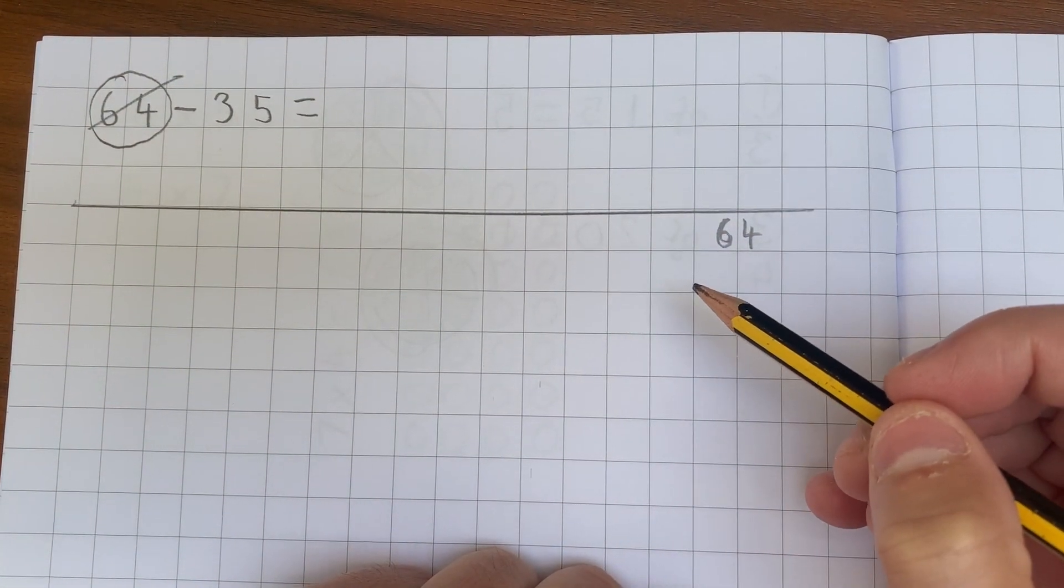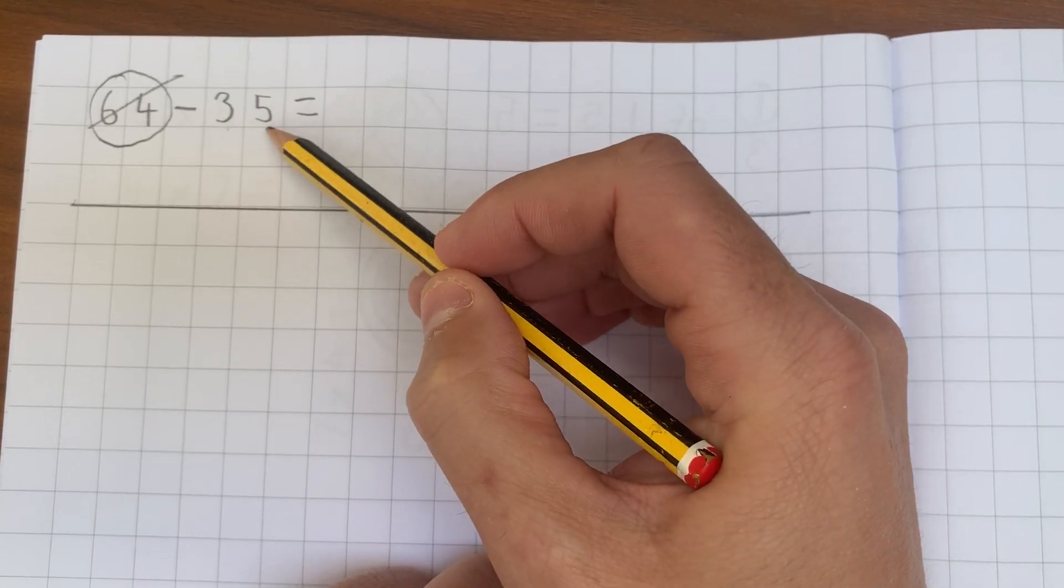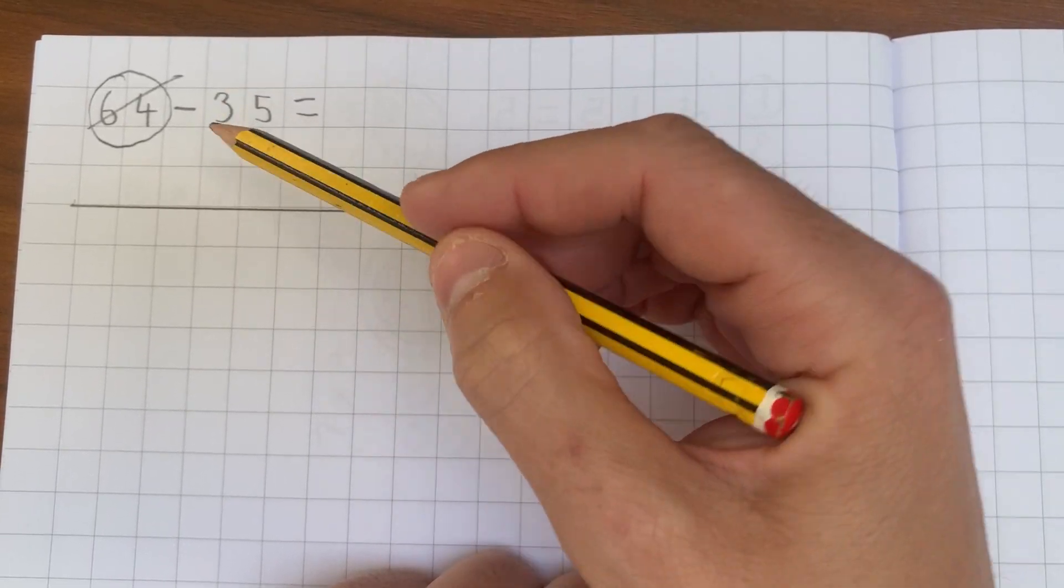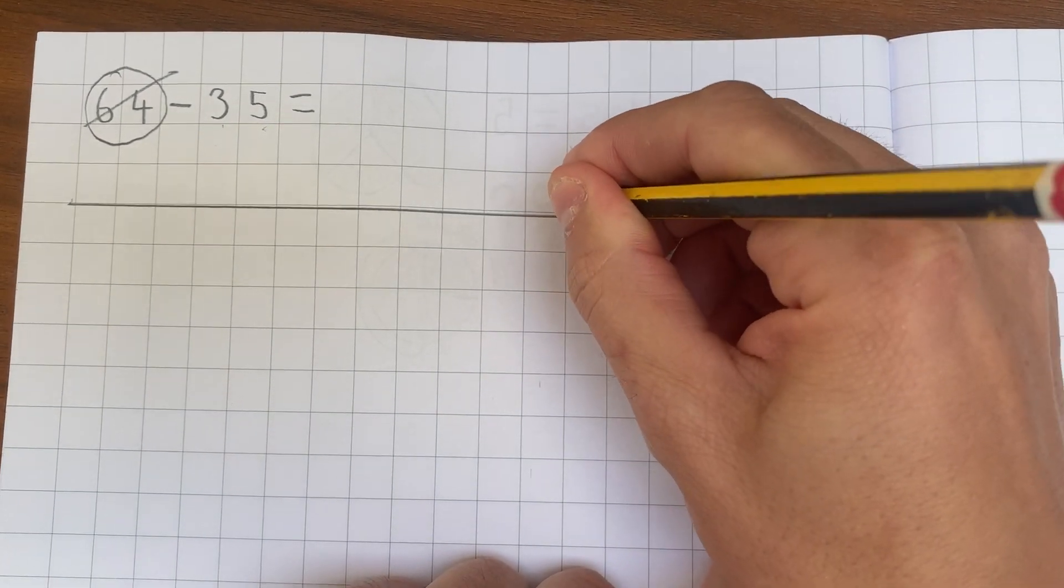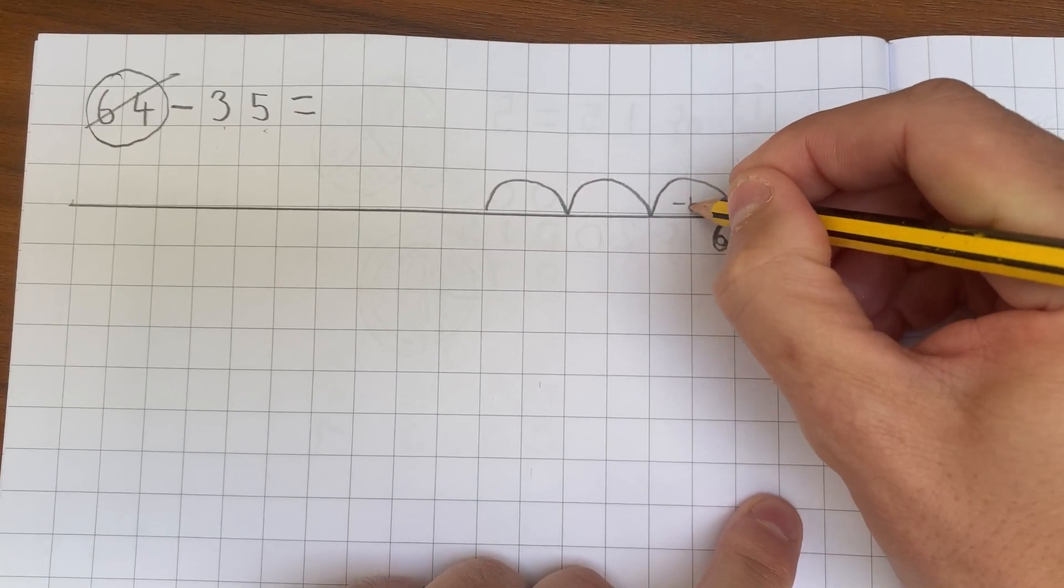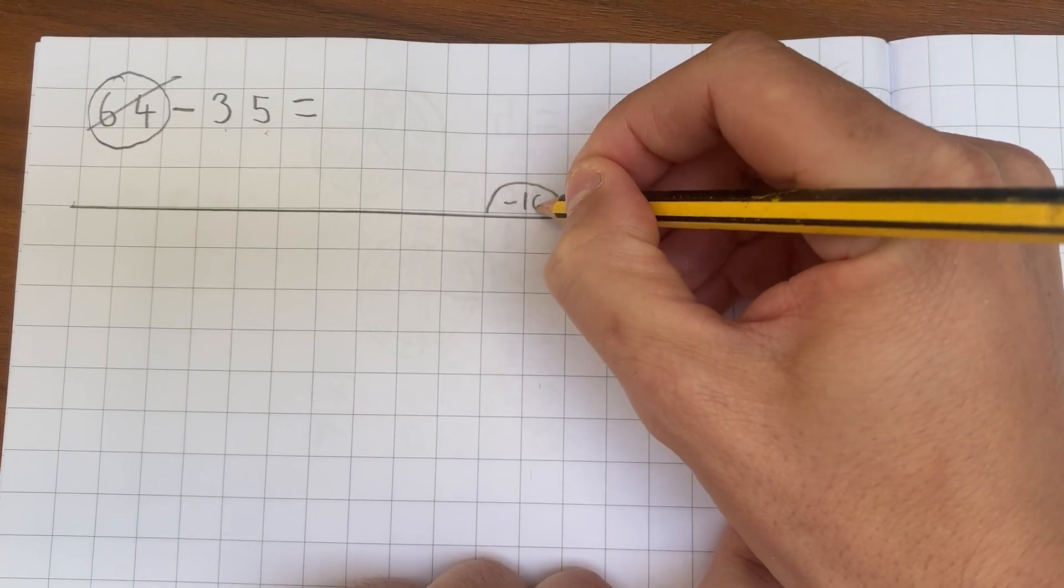And now I need to use my place value knowledge to split up the number 35 into three tens and five ones. I'm going to start with my tens here. I'm going to count backwards. I'm going to take away three lots of tens. So this is going to be take away ten. This is going to be take away ten. And this is going to be take away ten.